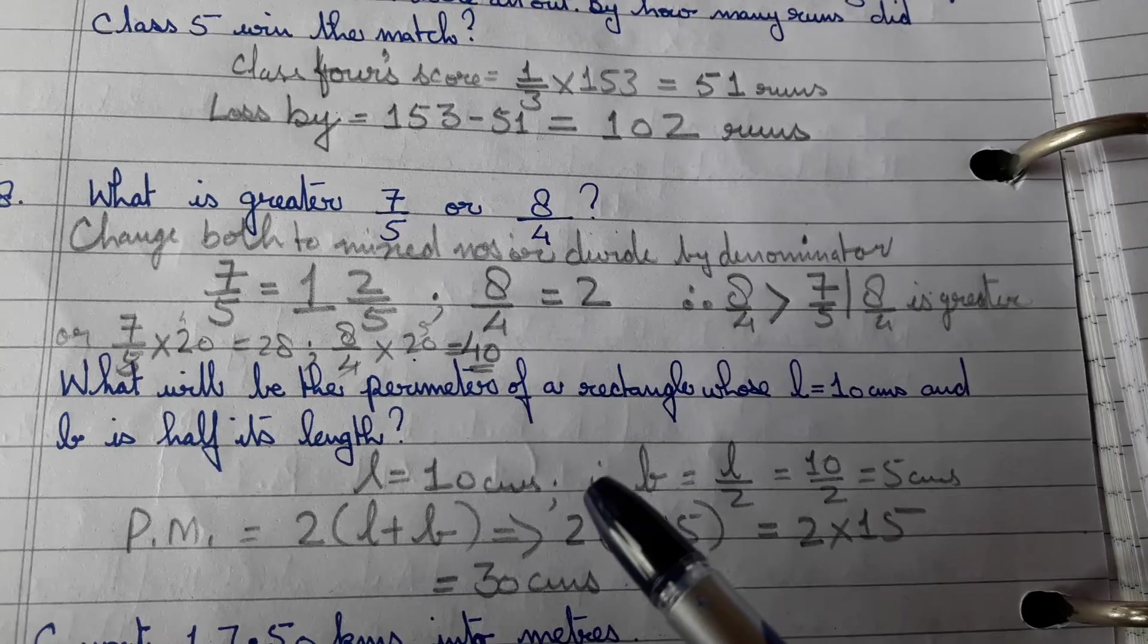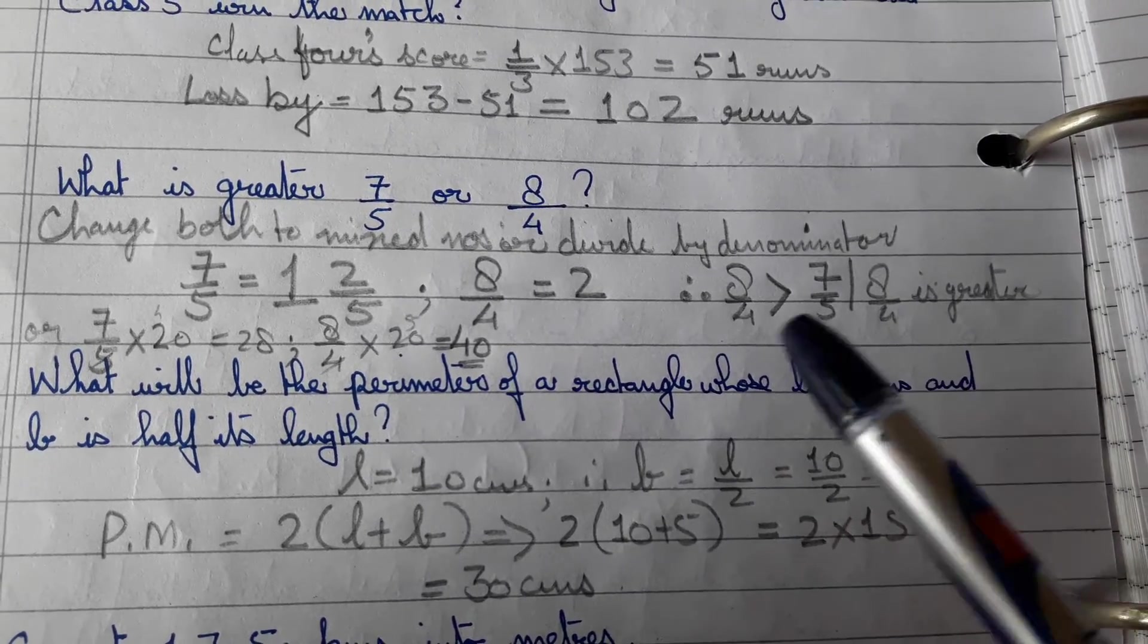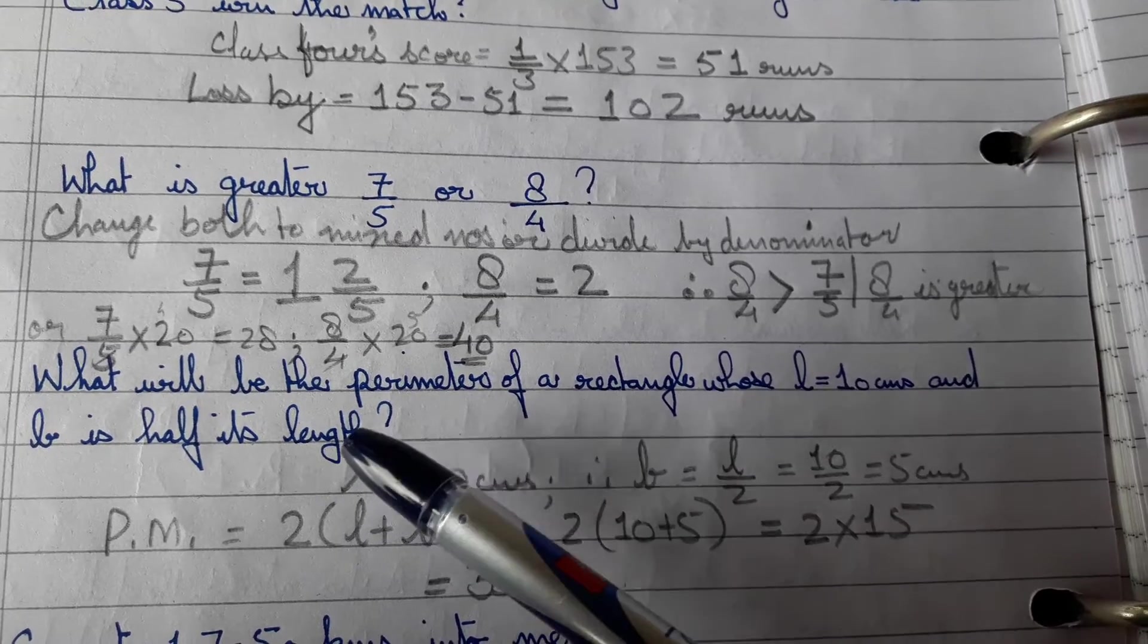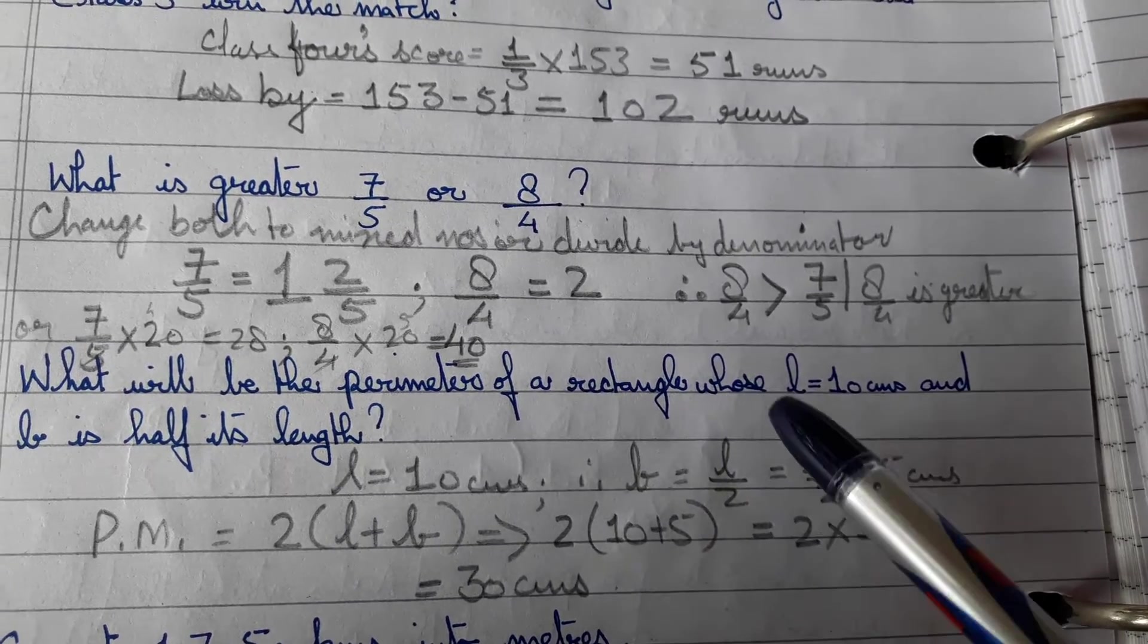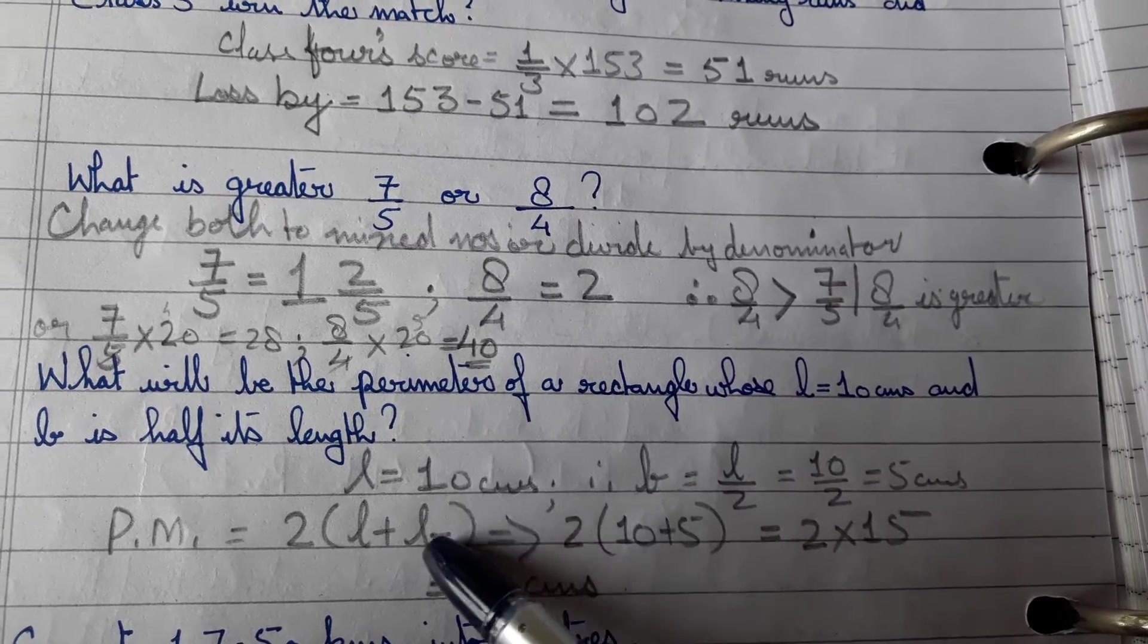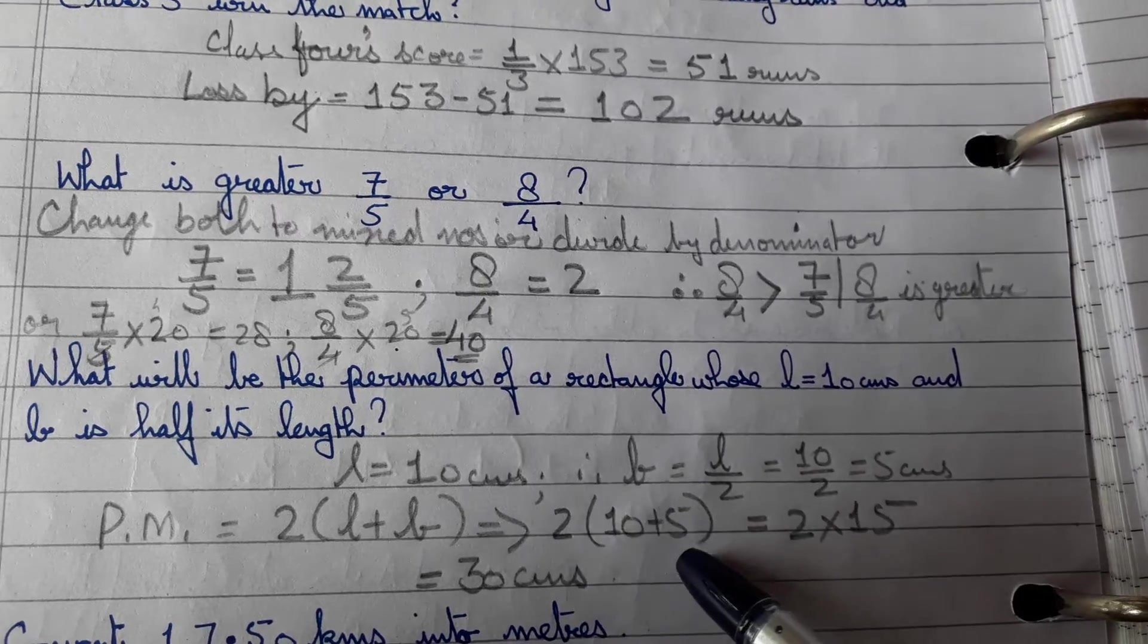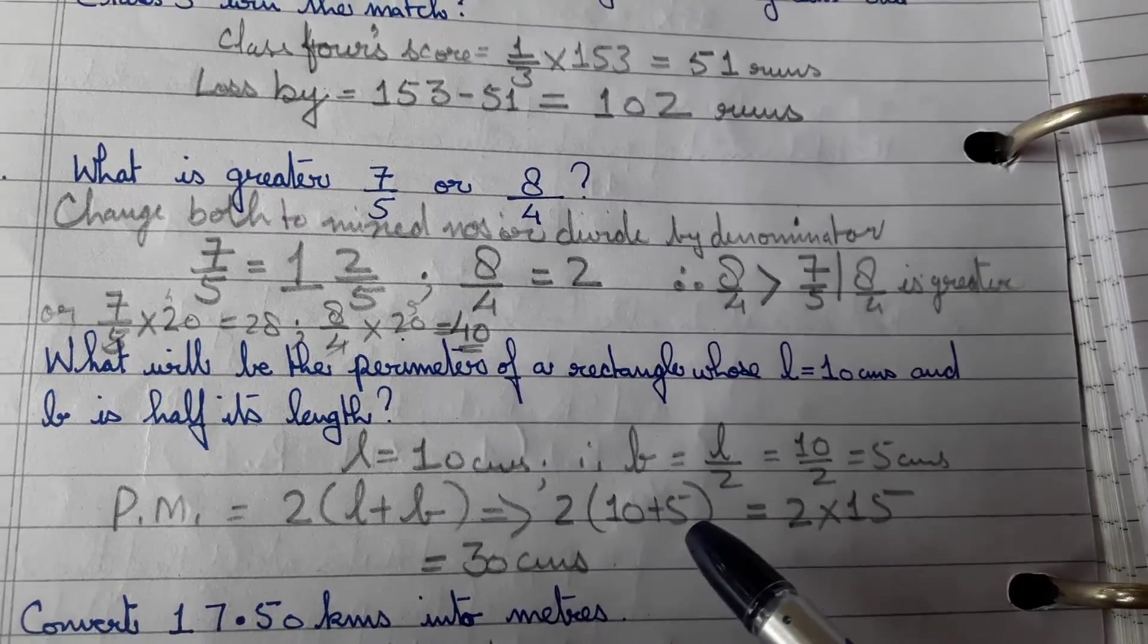What will be the perimeter of a rectangle whose length is 10 and breadth is half its length? Very easy. So find the breadth, length by 2 is 5 centimeters, and the formula is 2(length plus breadth). So 2 outside brackets 10 plus 5, 2 into 15 is 30 centimeters.